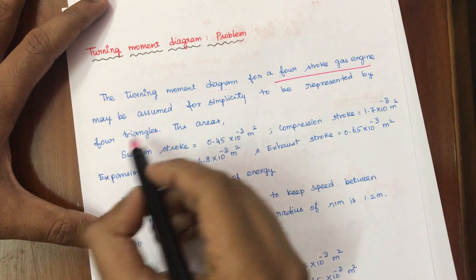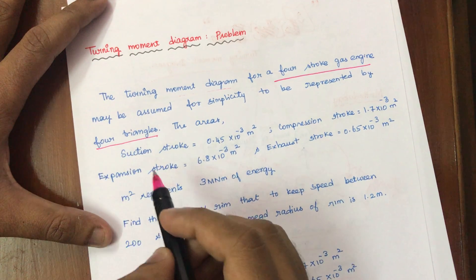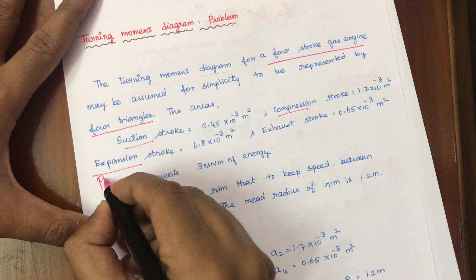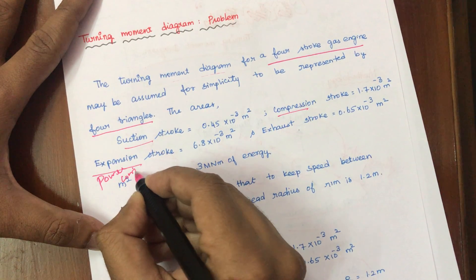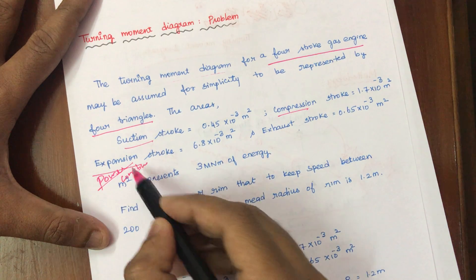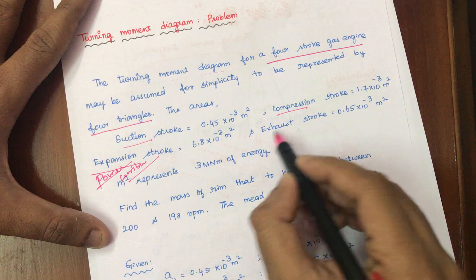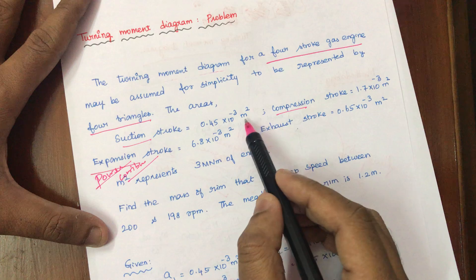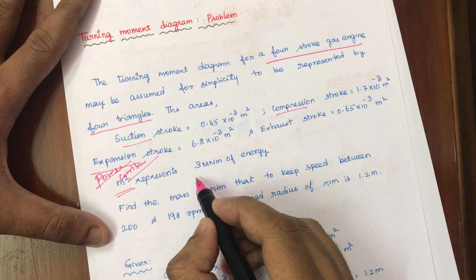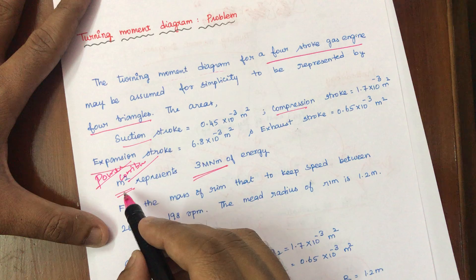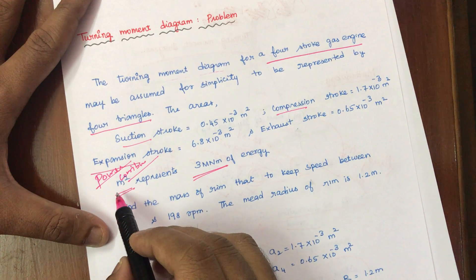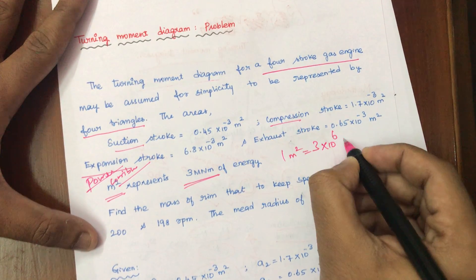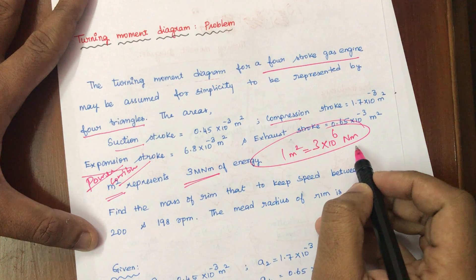In the 4-stroke engine, each over-stroke is a triangle area. The four strokes are: suction, compression, expansion (which is the power or combustion stroke — the main expansion stroke), and finally exhaust. The area values are in metre squared. They have stated that 1 metre square represents 3 mega newton metre of energy, so 1 m² = 3 × 10⁶ N·m.